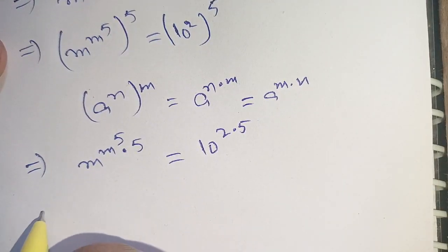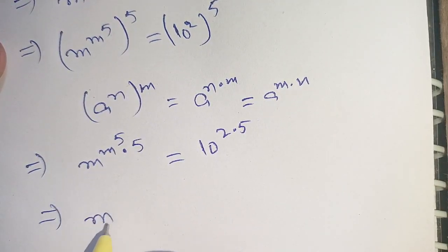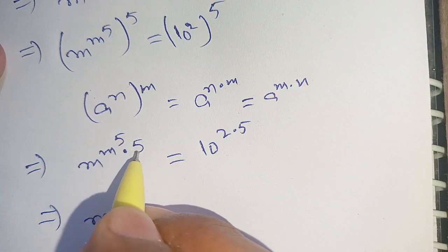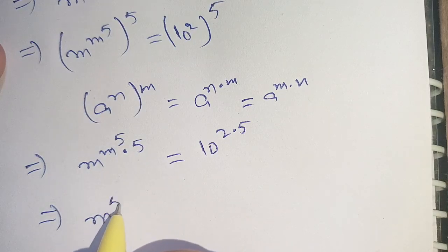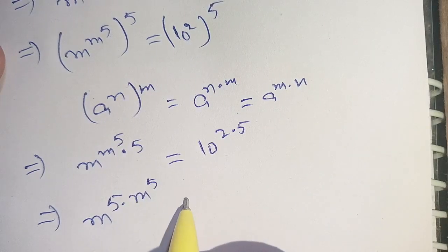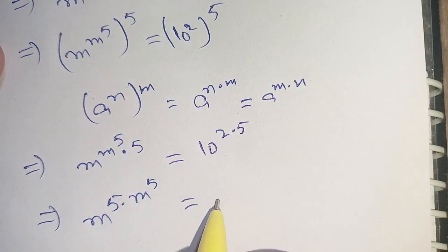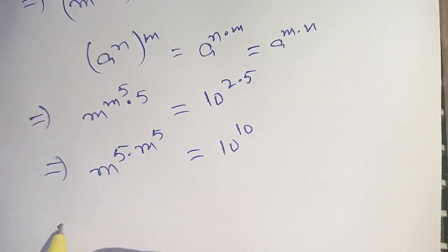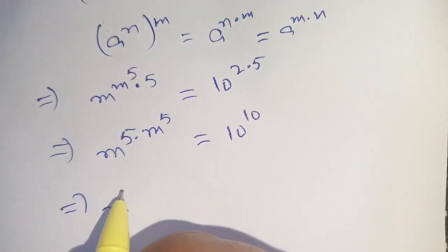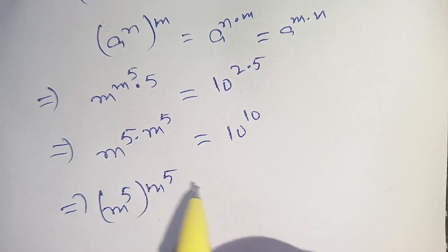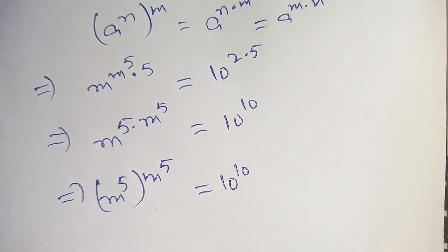Now on the next step, the 5 can shift in place of m raised to the power 5, and m raised to the power 5 shifts in place of 5. So we can write this as m raised to the power 5 times m raised to the power 5 is equal to 10 raised to the power 10. In the next step we can write this as m raised to the power 5, m raised to the power 5, is equal to 10 raised to the power 10.